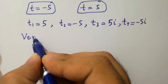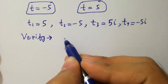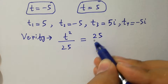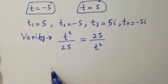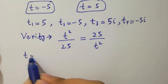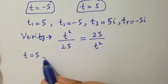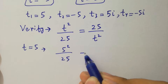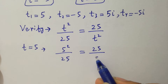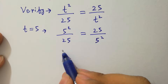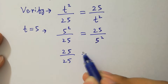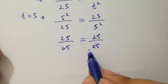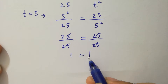Now we verify by substituting into t² over 25 equals 25 over t². Put t equals 5: 5² over 25 equals 25 over 5². That is 25 over 25 equals 25 over 25, which gives 1 equals 1. Left hand side equals right hand side.